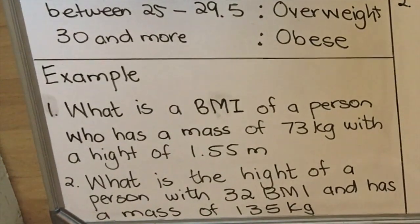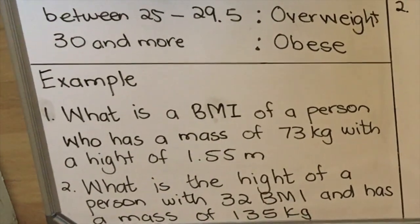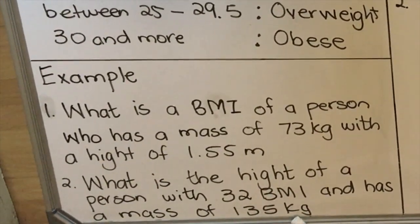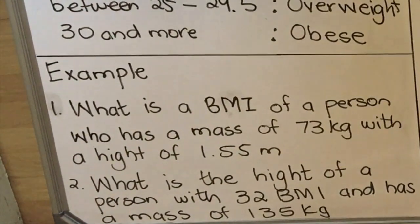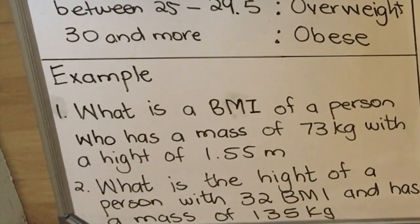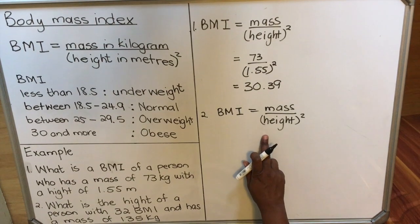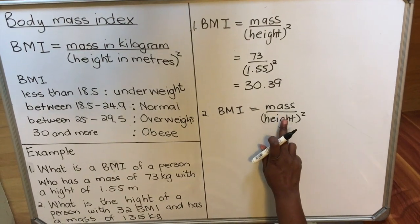Let's look at the next question. The second question says: What is the height of a person with 32 body mass index and has a mass of 125 kilograms?